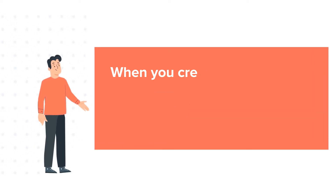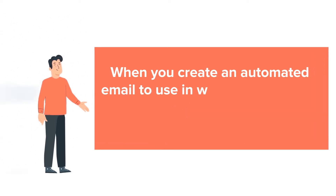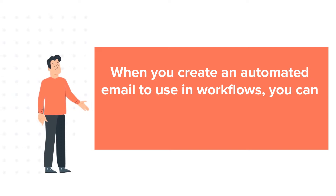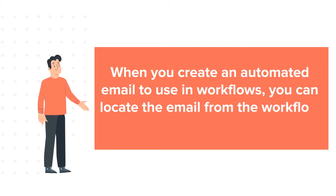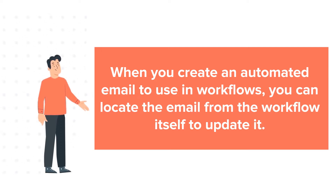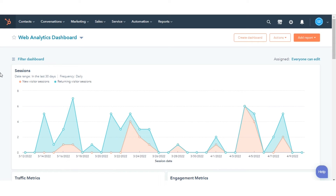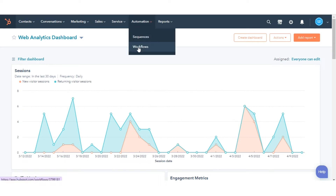When you create an automated email to use in workflows, you can locate the email from the workflow itself to update it. In your HubSpot account, navigate to Automation and click Workflows.